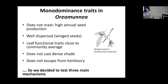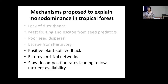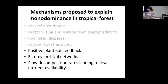Going back to Oremunia — Oremunia doesn't have some traits that monodominants should have. It doesn't produce very high numbers of seeds, it is well-dispersed, it has leaf functional traits close to the community average, it does not cast dense shade, and it does not escape from herbivory. We are left with three main testable hypotheses: the presence of positive plant-soil feedback, the presence of ectomycorrhizal networks, and slow decomposition rates leading to low nutrient availability.